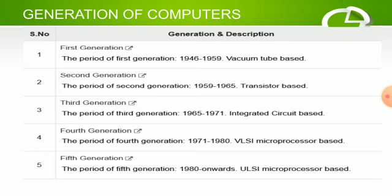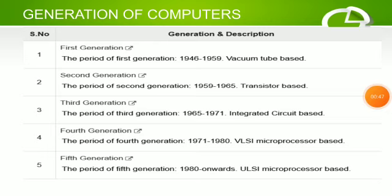First generation: the period of first generation is 1946 to 1959, vacuum tube based. Second generation: the period of second generation is 1959 to 1965, transistor based. Third generation: the period of third generation is 1965 to 1971, integrated circuit based.